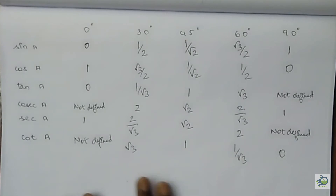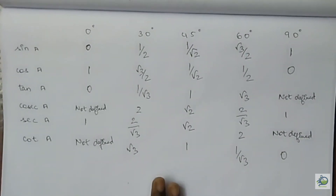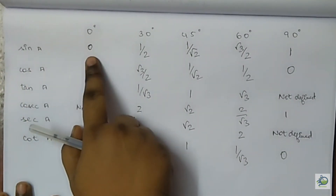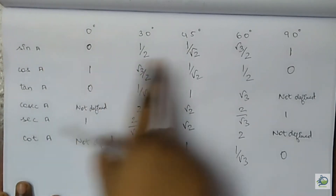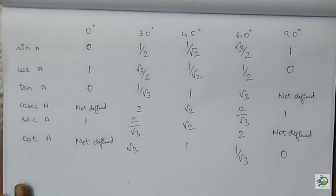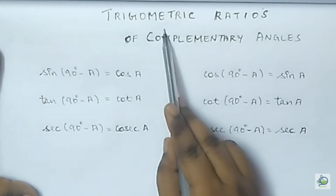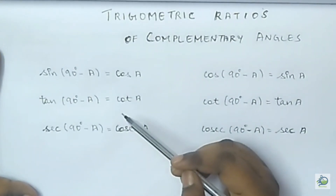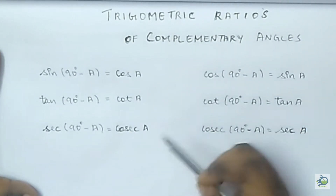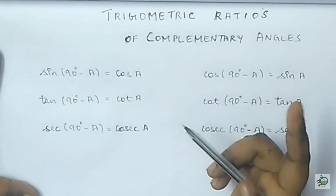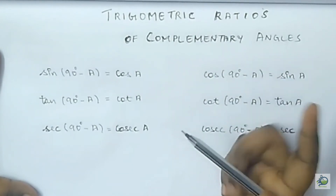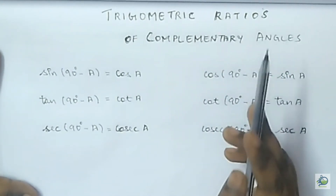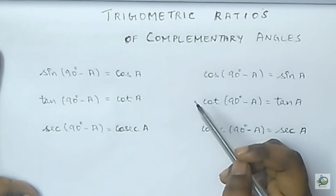That's all — no need to memorize this table. By just knowing the answers for sin A, we can fill the entire table. Now, trigonometric ratios of complementary angles. Complementary angles are defined as two angles whose sum equals 90 degrees; both angles are said to be complementary to each other.